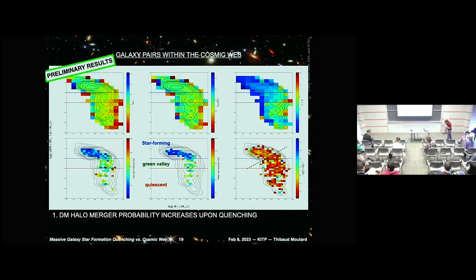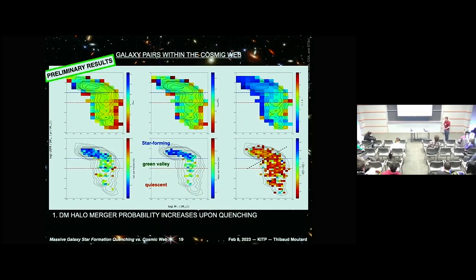Question: Can you unpack the word 'simultaneous' regarding mergers and quenching? Answer: It is just to say that when you look at the major pair or dark matter merger fraction, there is a sharp difference when you enter the green valley and start quenching — so that is why I say simultaneous. But yes, obviously it needs to be much better constrained.